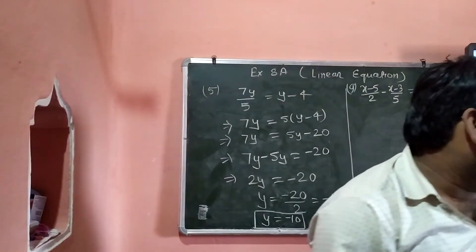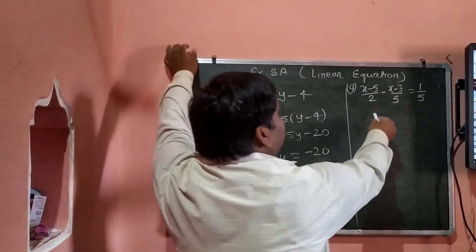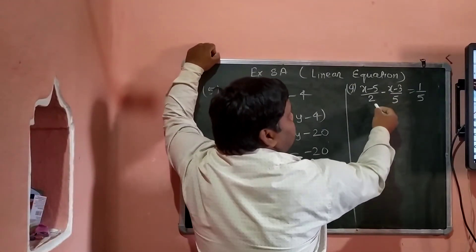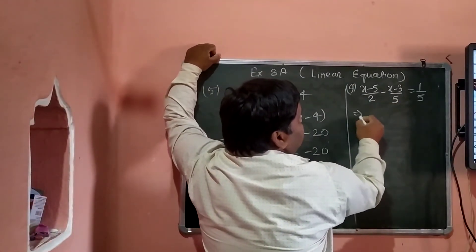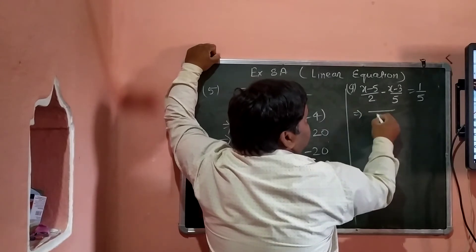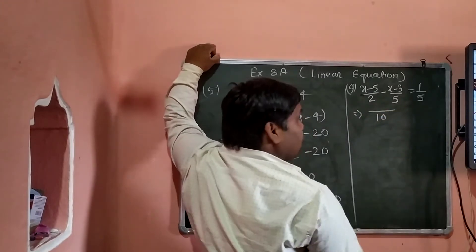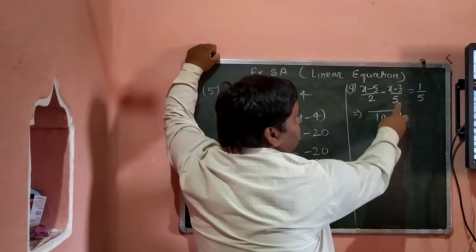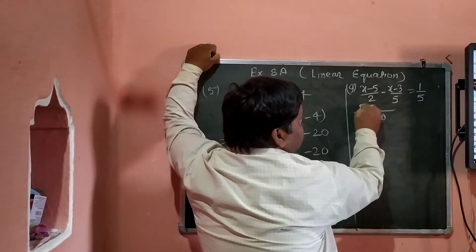इस question को जब हम solve करेंगे तो पहले LCM लेते हैं। 5 और 2 का LCM 10 होगा, क्योंकि 5 prime number है। इस 5 को 2 से multiply कर दीजिए।